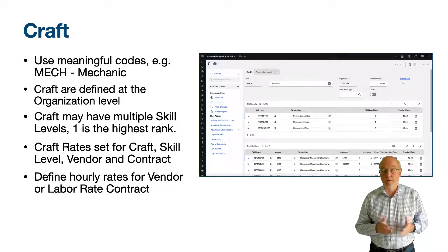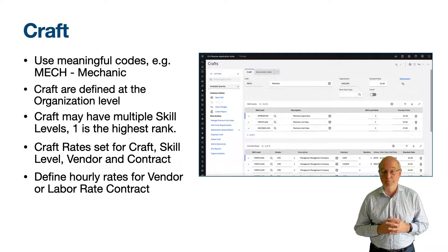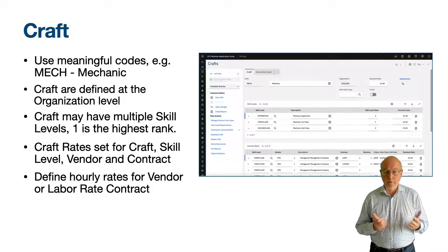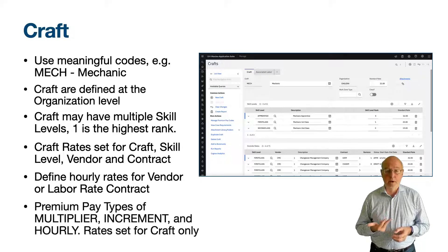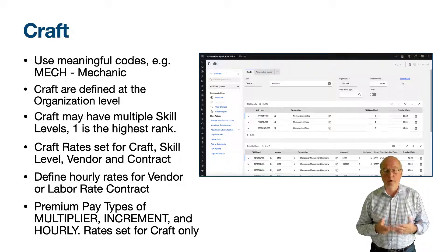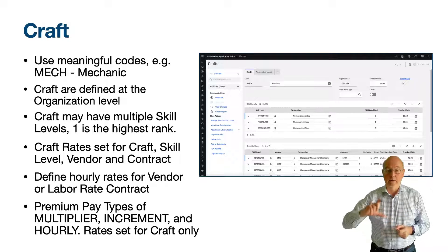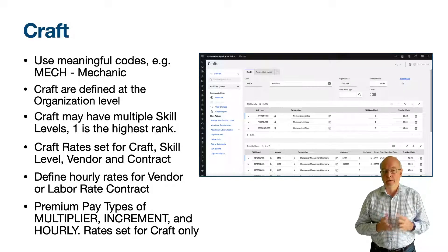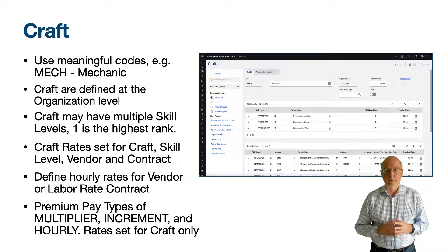Maximo calculates the line costs by applying the craft and/or labour rates to each of the regular hours and premium pay hours, applying any uplifts to rates set by the premium pay code. You do need to select the right premium pay code — Maximo will not derive from the time entry that it is a Sunday and that premium pay code OT3 should be applied. Premium pay codes are defined by using the action Manage Premium Pay Codes, also defined at the organisation level. There are three default rate types: multiplier, increment and hourly. The multiplier multiplies the rate by a factor, e.g. 1.5 or 2. The increment type adds an hourly rate on top of the standard rate. The hourly rate type is a static hourly rate that you enter in the default rate field.